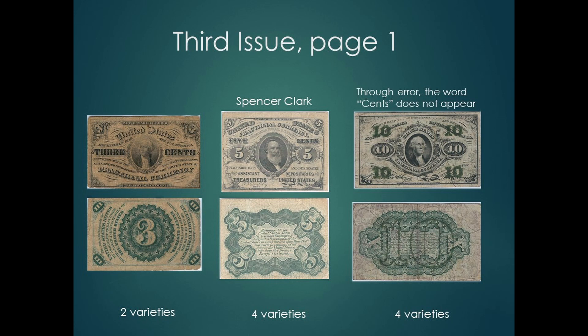The 3-cent note was added to correspond with the cost of a stamp. It was only made for a short time, from January to April of 1865, because of the introduction in 1865 of the 3-cent nickel coin. In the law authorizing the coin, 3-cent notes were no longer authorized and were to be redeemed. Spencer Clark, Superintendent of the National Currency Bureau, put his bust on the 5-cent note. People initially assumed it was going to be the bust of the explorer William Clark of Lewis and Clark fame. Congress was not too pleased with Spencer. His audacity resulted in a new law that no living person can appear on U.S. coins, currency, or bonds.